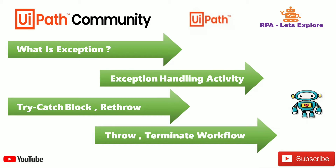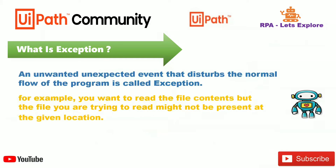So first, what is an exception? An exception is an unwanted, unexpected event that disturbs the normal flow of the program — this is called an exception. For example, you want to read the file content, but the file you are trying to read might not be present at the given location, so that's why an exception will occur.